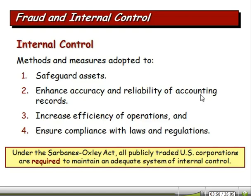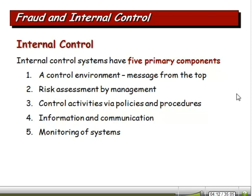Internal controls safeguard assets, enhance the accuracy and reliability of accounting records, increase efficiency of operations, and ensure compliance with laws and regulations. Good internal control systems have five primary components. The first — an absolute key — is the control environment. It's a message from the top that says fraud is not acceptable and we have to follow good internal controls.